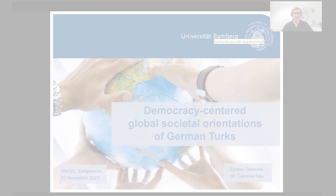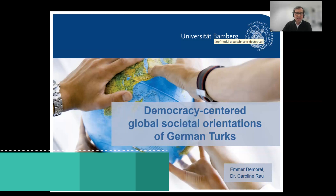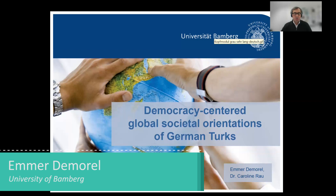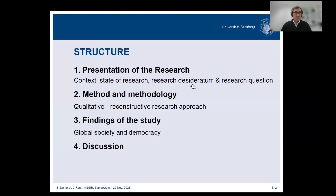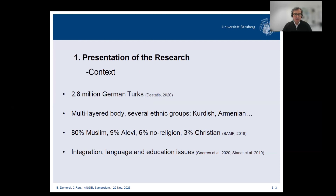Today I will be presenting about the democracy-centered global societal orientations of German Turks. The subject of my study is people living in Germany with a background from Turkey. German Turks are by far the largest group of immigrants in Germany and the group on which various problems of migration and integration are focused. This group is inherently complex, comprising several ethnic groups. In my research, I use the term German Turks to refer to all individuals who have family roots in Turkey, regardless of their ethnic and religious identity or their own migration experiences.